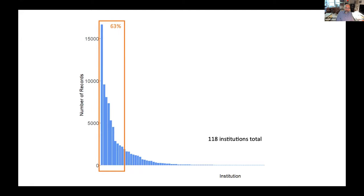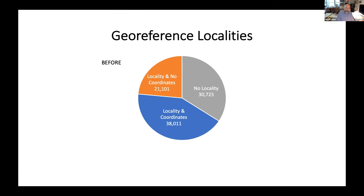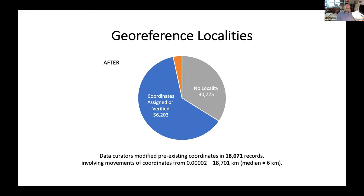The records are curated by 118 institutions worldwide, and the top 10 of these institutions together share 63% of the records. We could only assign or assess coordinates for collection locations when those locations are described in the shared data, and about two-thirds of the records had that information. Of those, about two-thirds arrived with pre-assigned coordinates and one-third did not. We were able to assess or assign coordinates in 95% of the total possible cases, and we modified pre-existing coordinates about half the time.